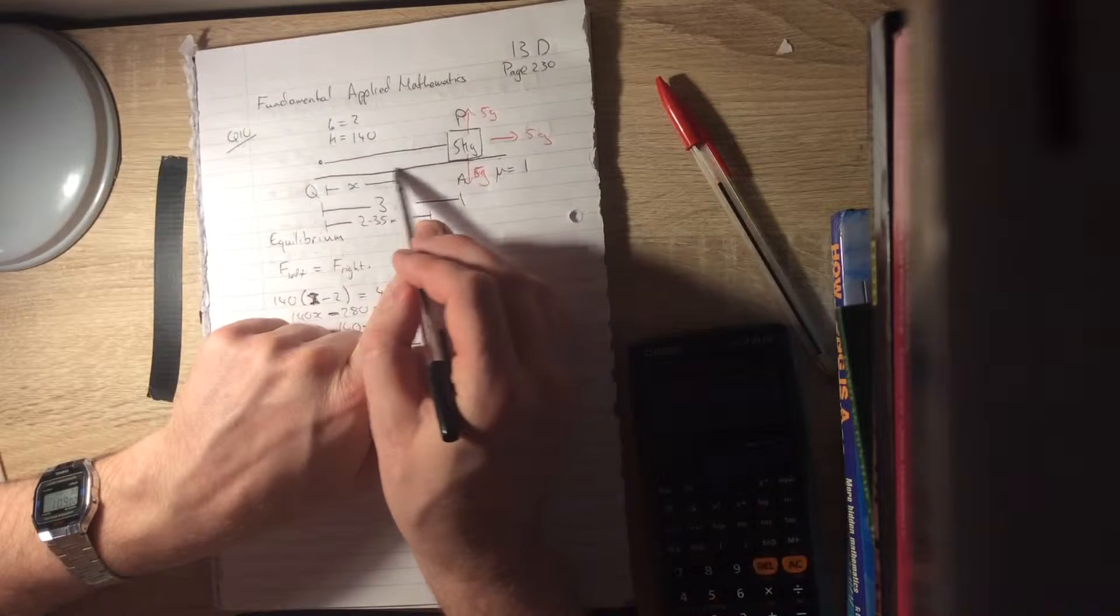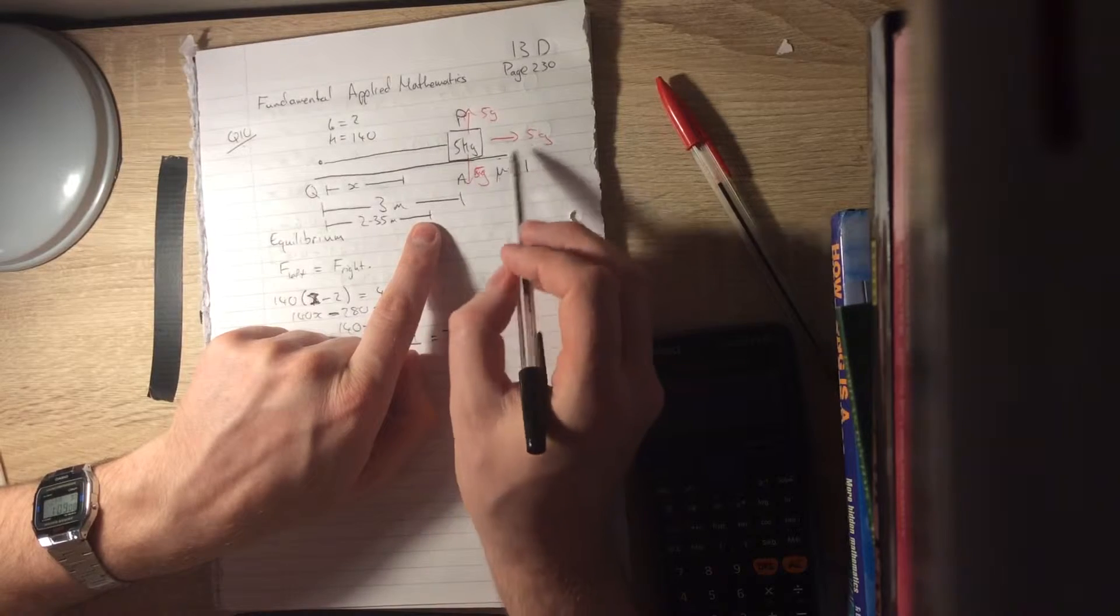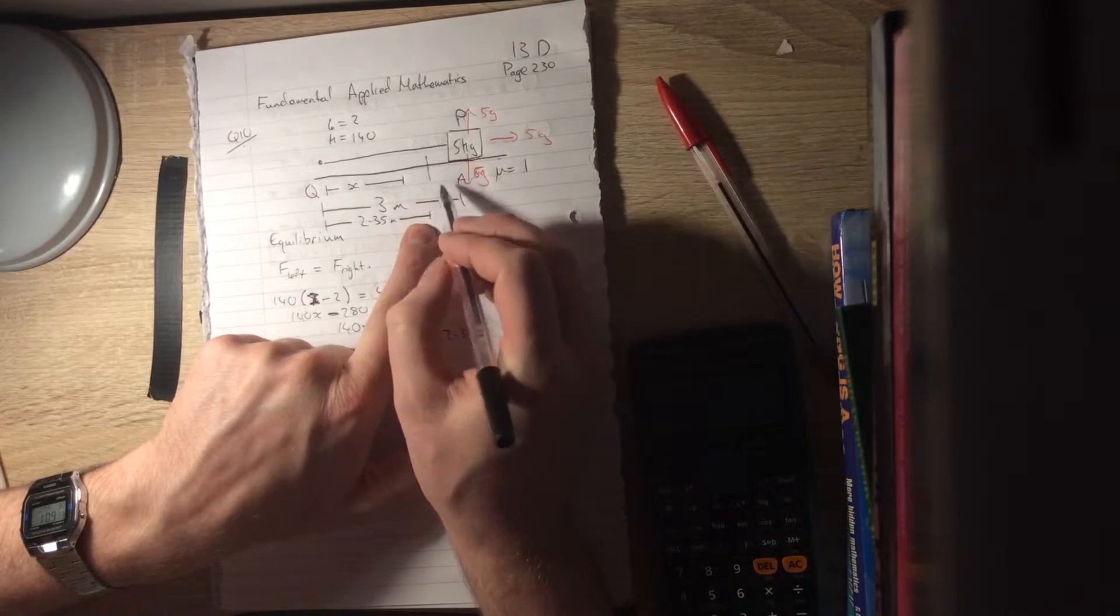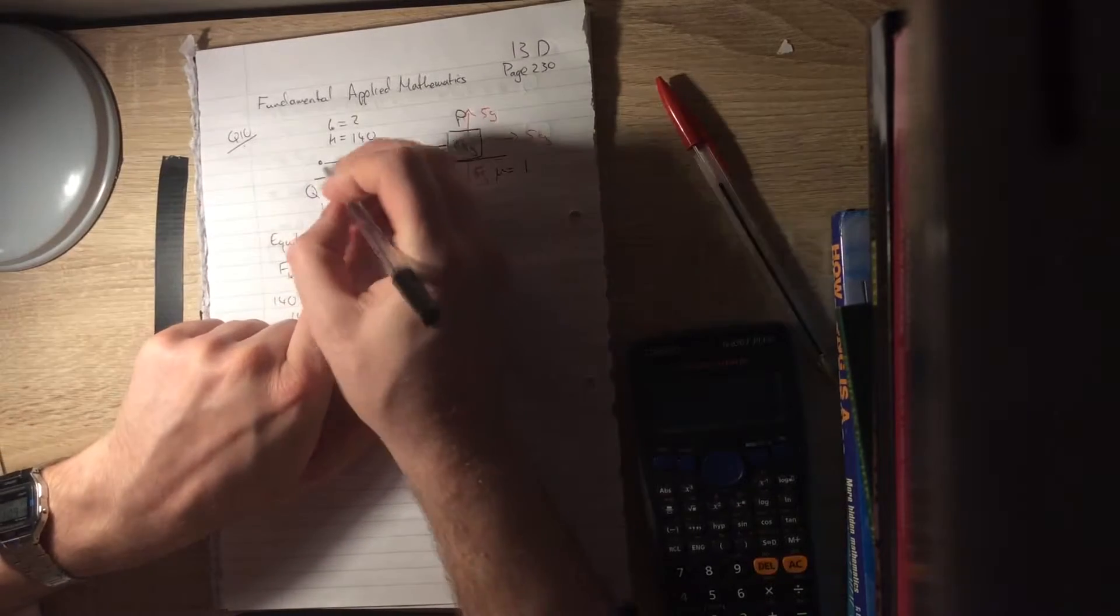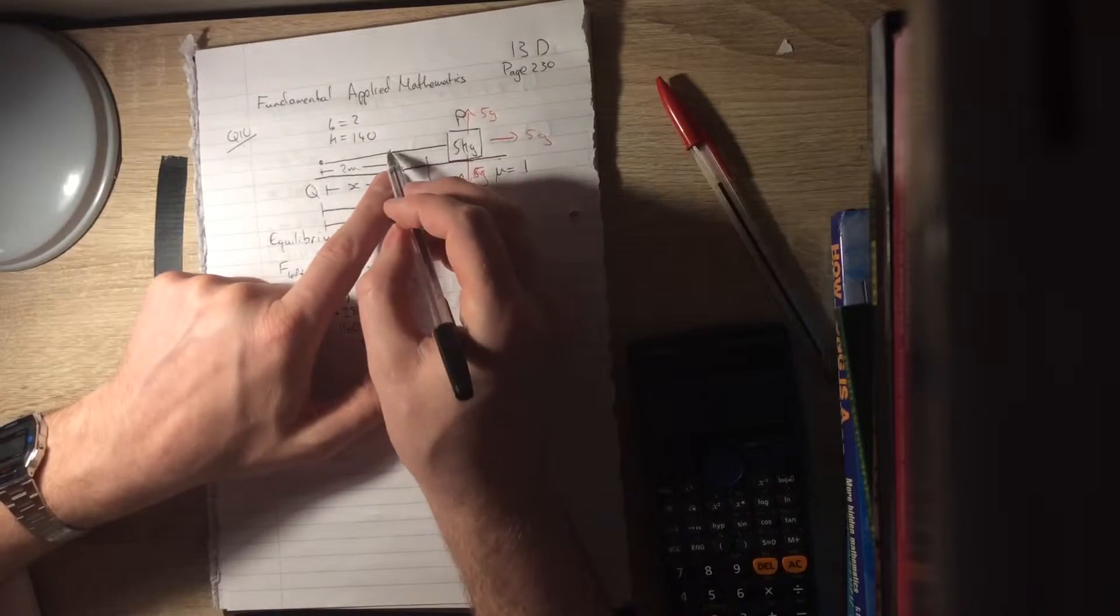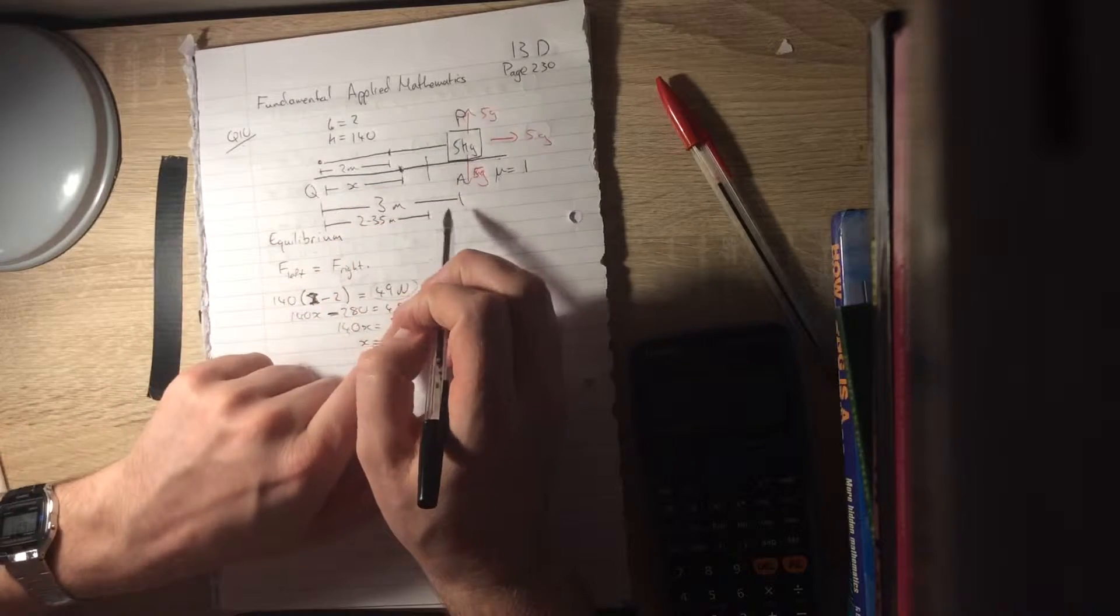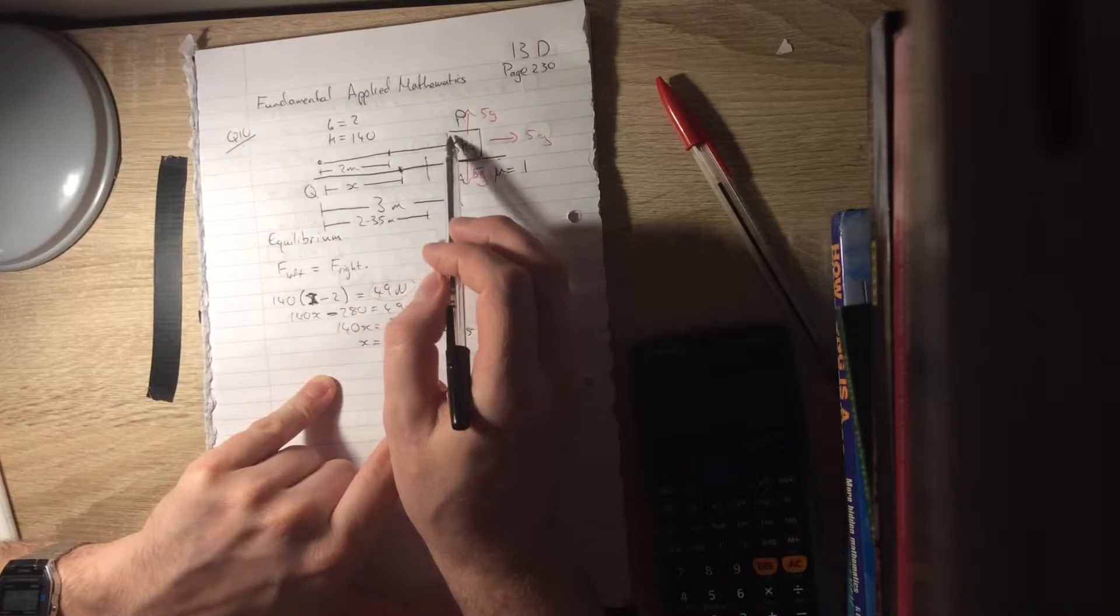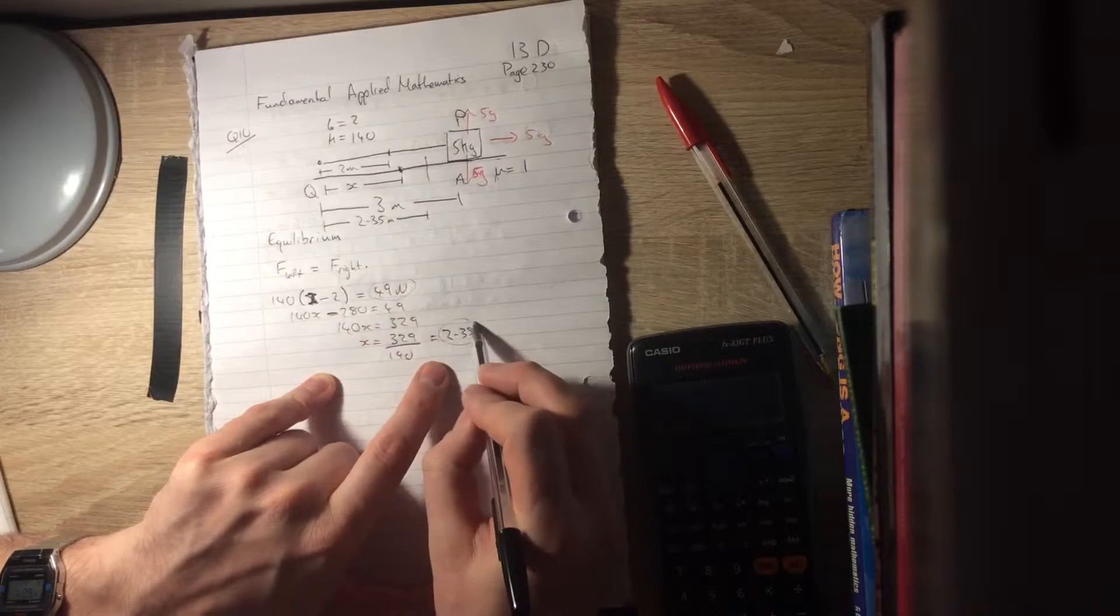Which means our particle will move with simple harmonic motion around that point. When it gets beyond that, this 49 newtons, once it gets beyond 2.35 metres, is going to be the bigger force. So you're now slowing down until you get to a point 2 metres in, where the string goes slack. When it reaches 2 metres, the string goes slack and it stops moving with simple harmonic motion. So we're only interested in how long in this section where it's moving with simple harmonic motion, which is between 3 metres away and 2 metres away.